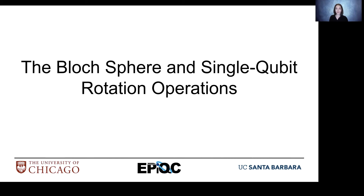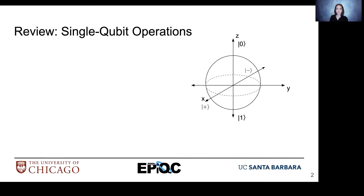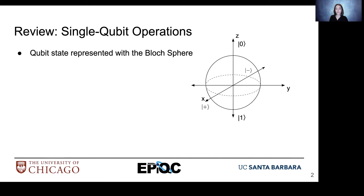Previously we talked about the Bloch sphere, and today we're going to talk a little bit more about how single qubit operations are implemented and what that looks like on the Bloch sphere. Single qubit operations are simply just rotations around the Bloch sphere if we're using the Bloch sphere as a visual representation of the qubit.